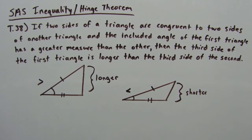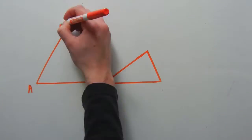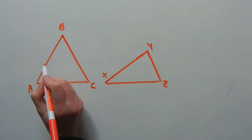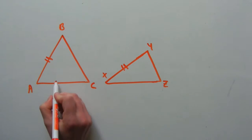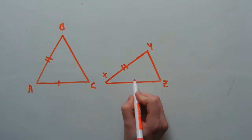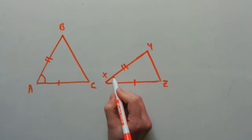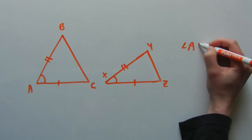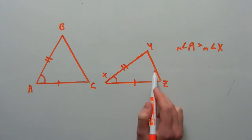Let's go ahead and prove this, and I'll warn you ahead of time that the proof is very long. Here I have two triangles, ABC and XYZ. Side AB is congruent to side XY, and side AC is congruent to side XZ. Also, the measure of angle A is greater than the measure of angle X. So we need to prove that this third side, BC, is larger than YZ.